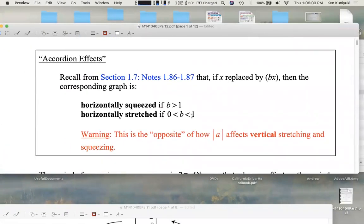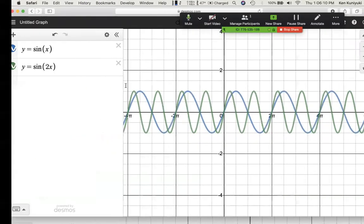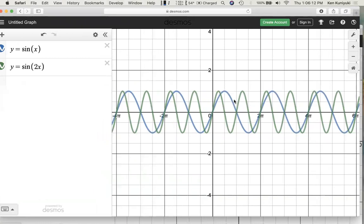Let's assume b is positive. We're assuming for now, b is positive. If b is greater than 1, surprise, it's not a horizontal stretch, it's a horizontal squeeze. Here, b is 2, we get a horizontal squeeze from blue to green.